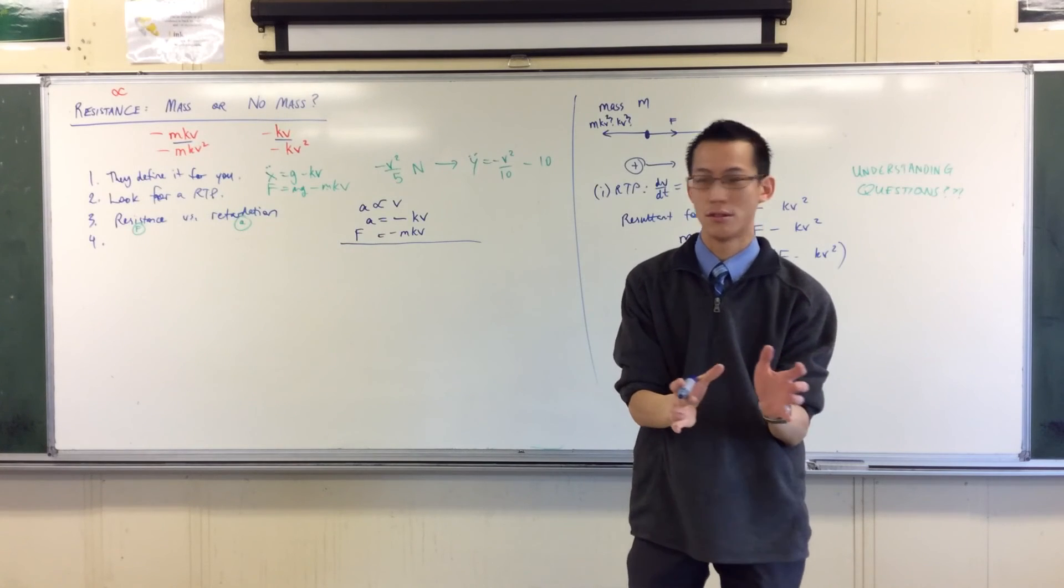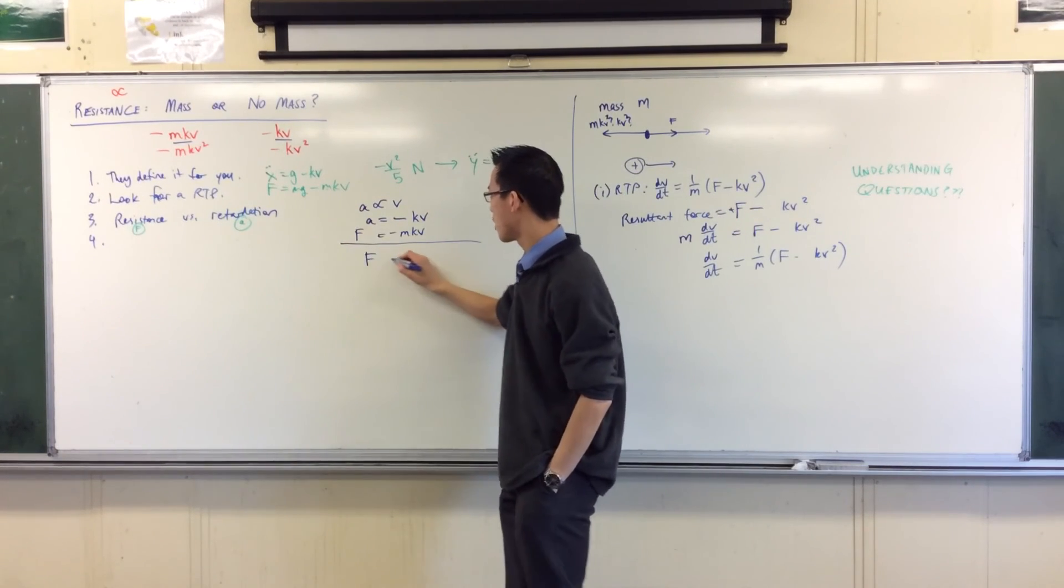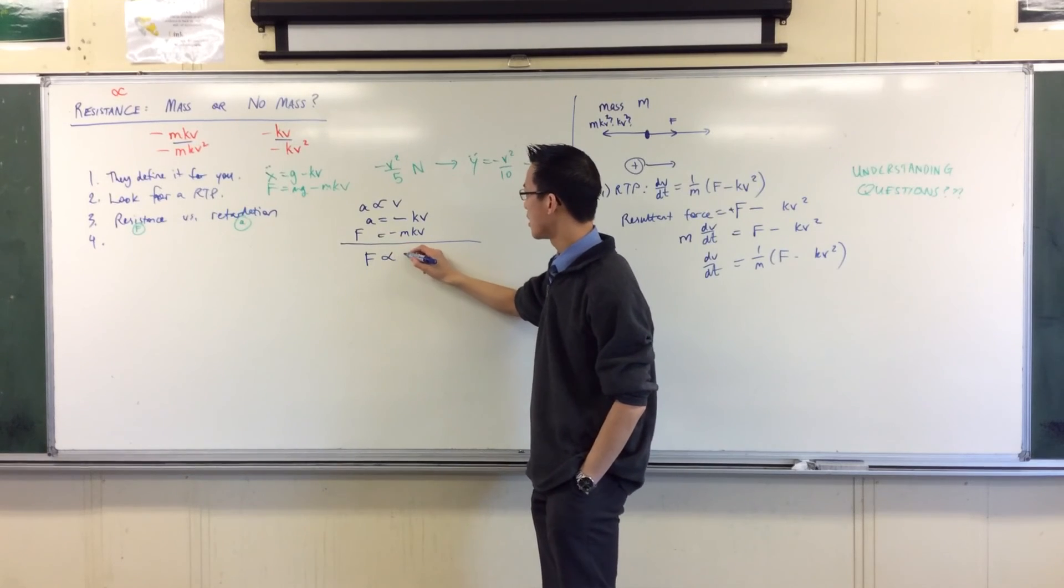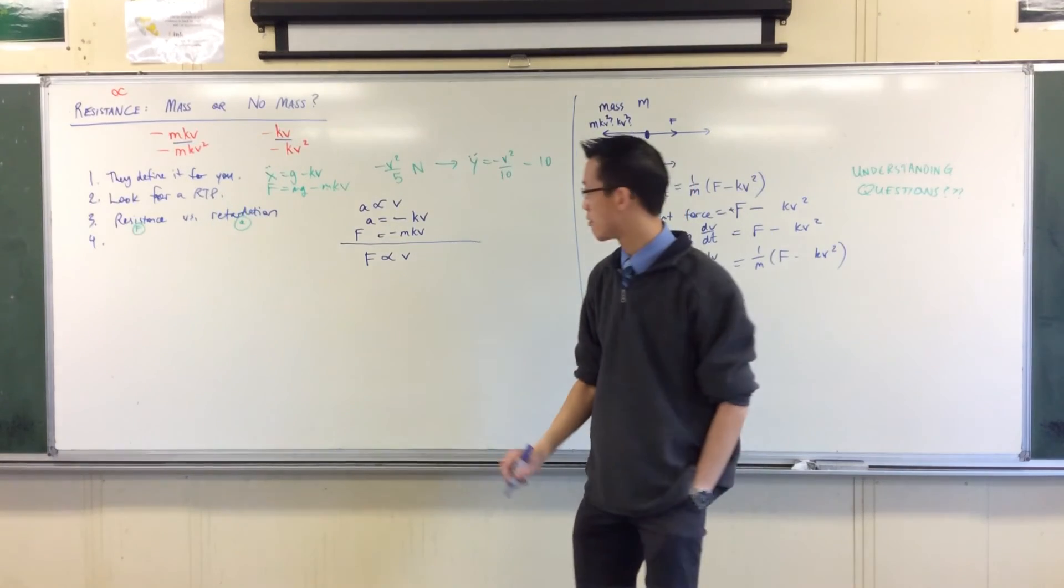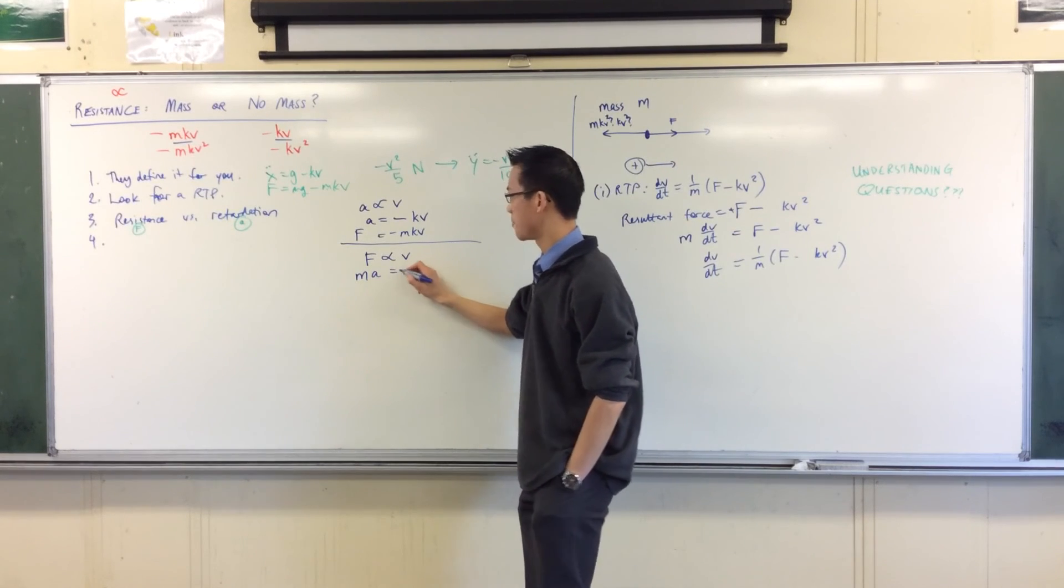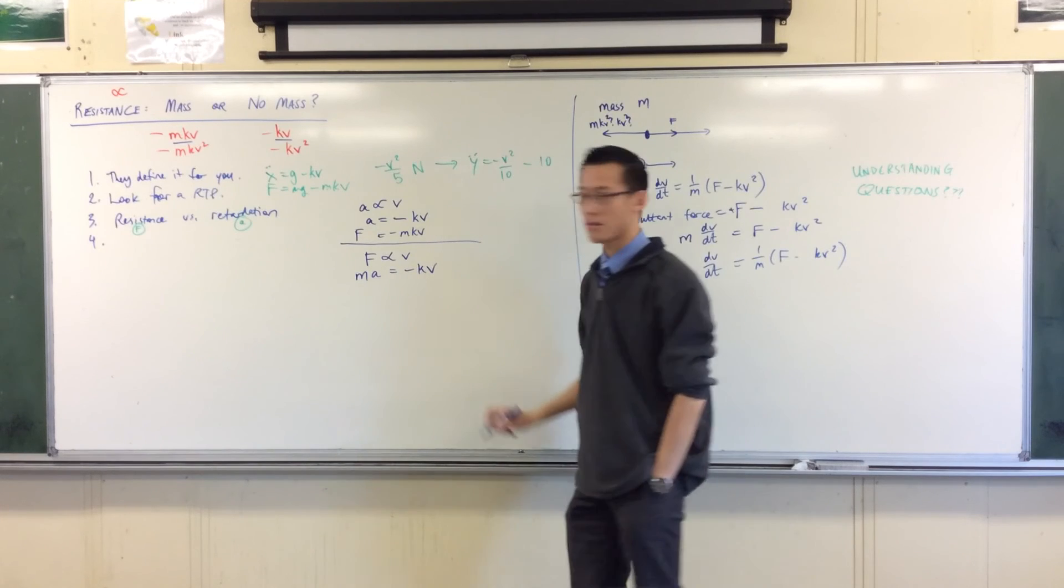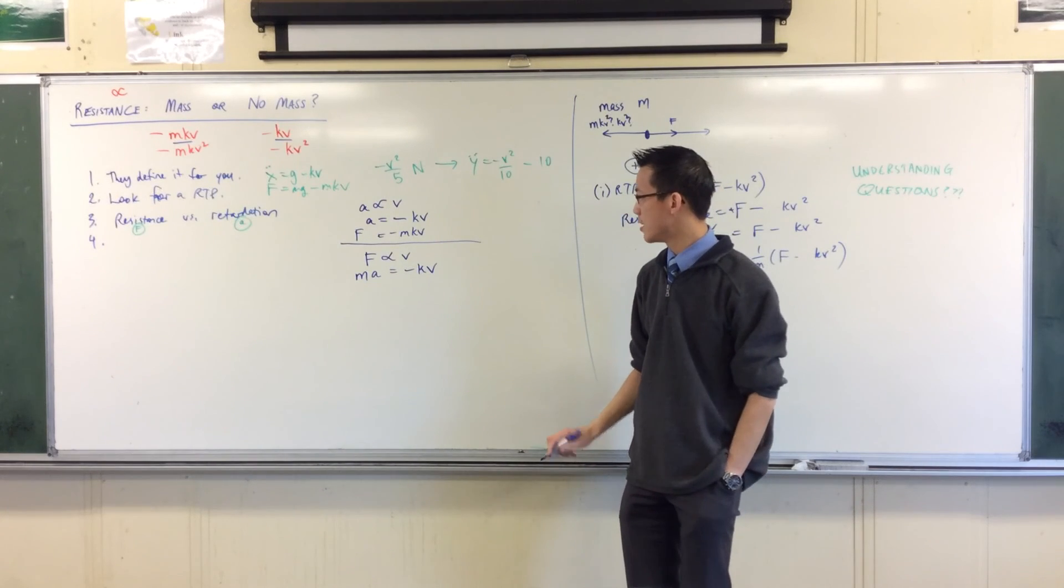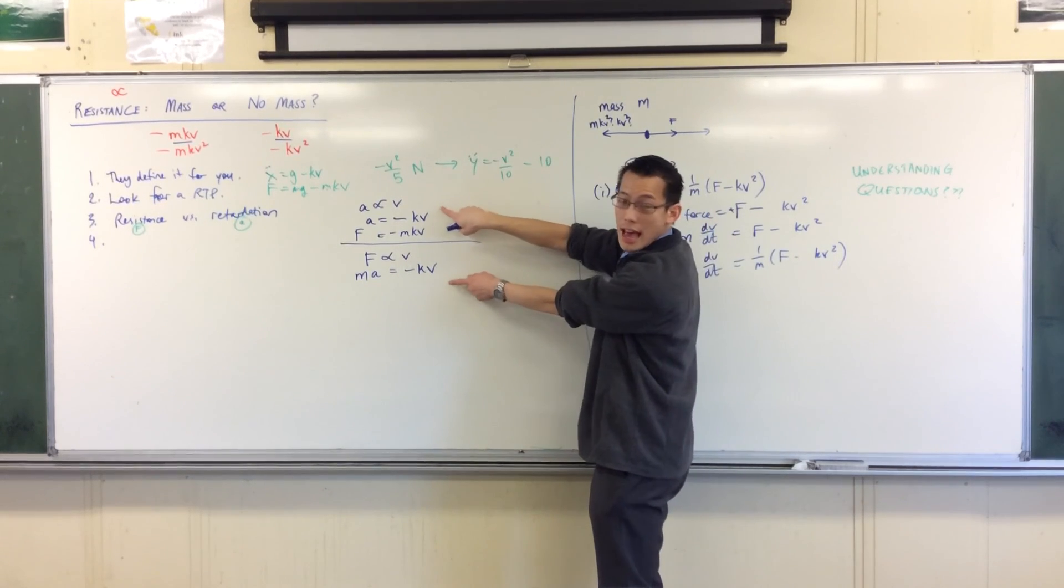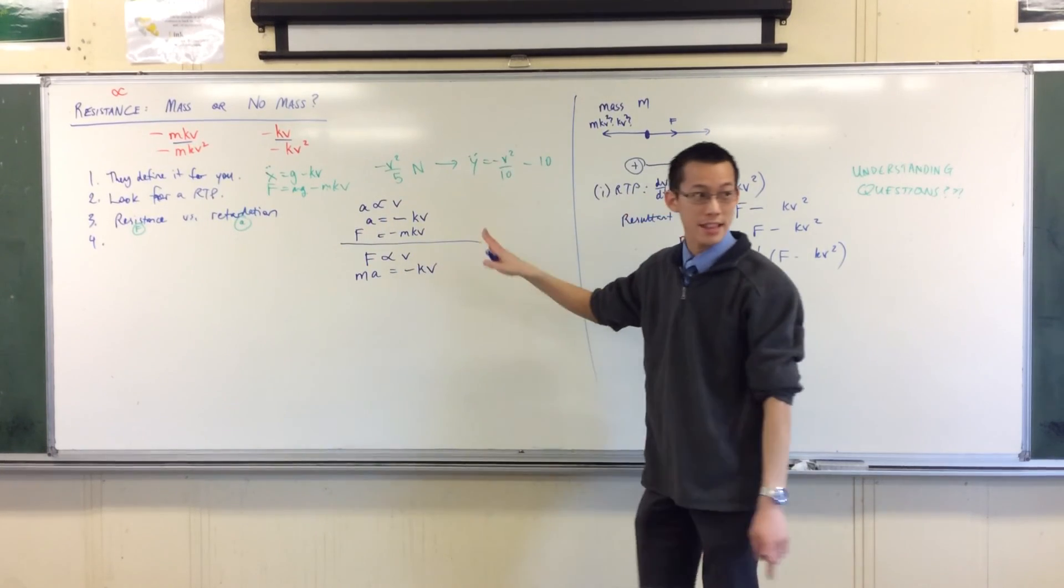On the other hand, if they tell me resistance is proportional, well resistance is not about acceleration, it's about a force. So if that force is proportional to velocity, that means mass times acceleration is equal to minus kv. So you can see the difference between these two lines as to whether it's resistance or retardation, do you have mass in there or not.